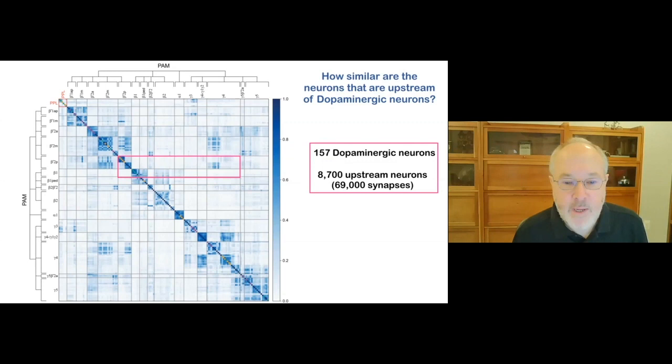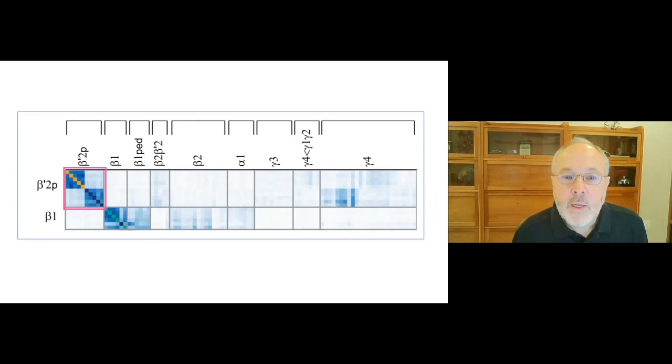In this matrix, dopaminergic neurons are clustered by the similarity of the inputs they receive from upstream neurons. Then the matrix has been sorted to group neurons that provide input to each of the mushroom body compartments. Given the number of neurons and synapses, this could only be done computationally using the database provided by the connectome. Let's zoom in and look at one part of this matrix in more detail. Notice how even within this single compartment, there are two clear classes of dopaminergic neurons. The darker the color of the individual squares in the matrix, the more similar the inputs are to the two dopaminergic neurons that overlap in that square.